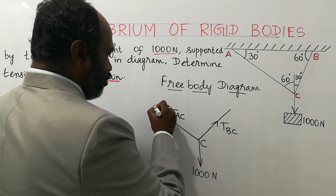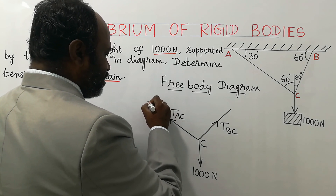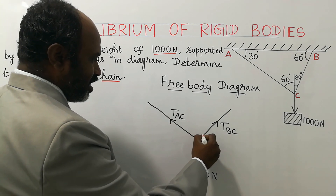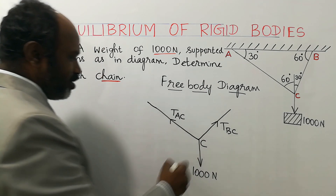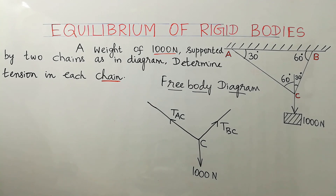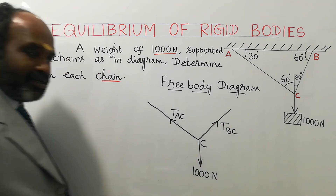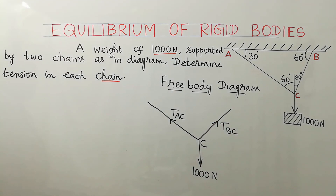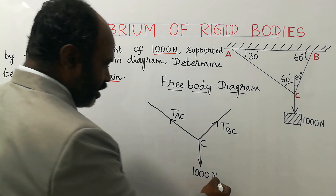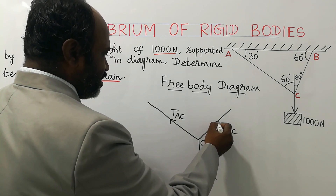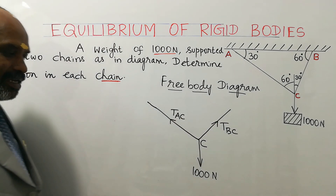We are going to find the various angles subtended by the strings — that is, this angle, this angle, and these angles are going to be found out. By applying Lami's theorem we are going to find the tension in strings AC and BC in terms of Newton. The unit of force or the load is Newton, so the same unit will be used for tension BC and tension AC.